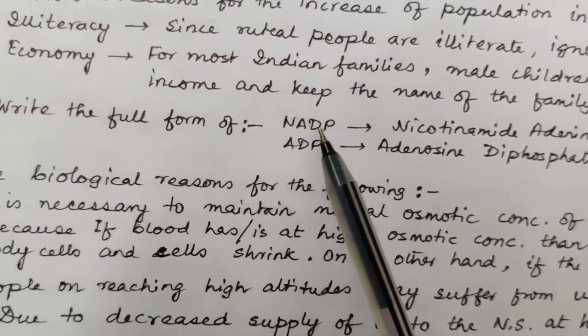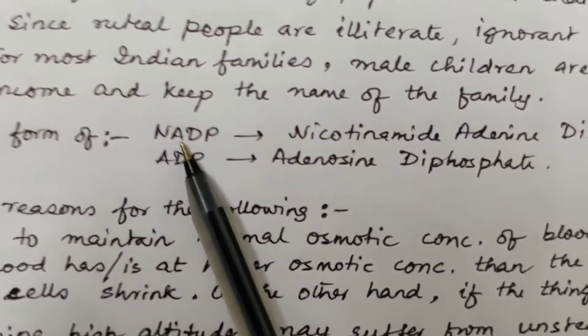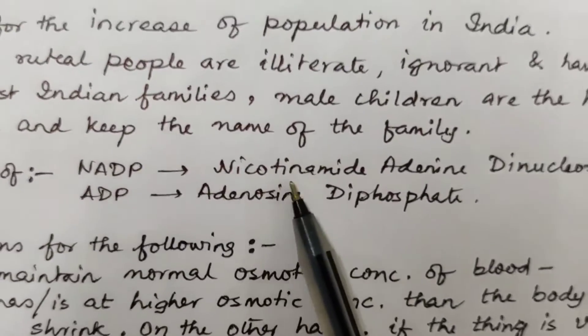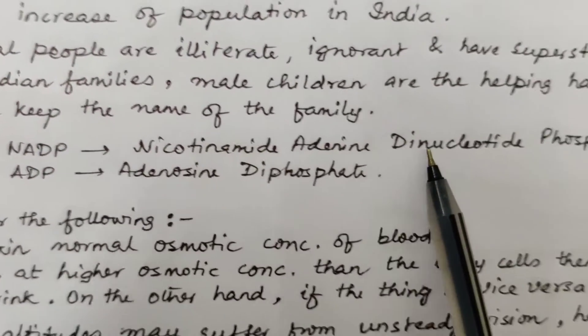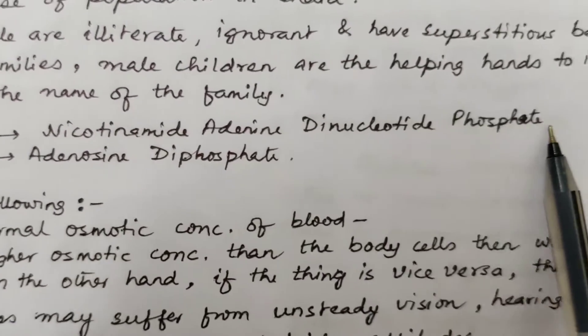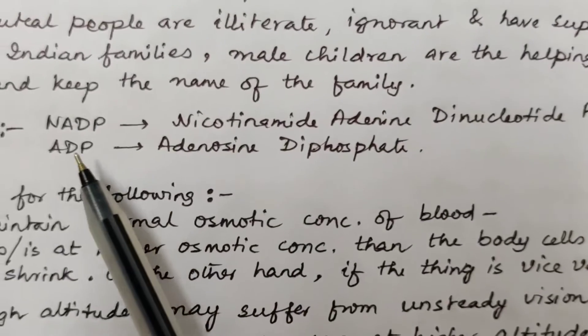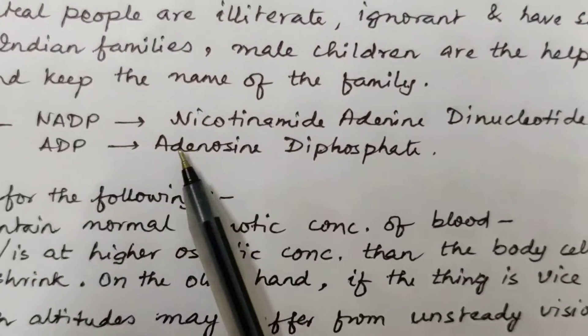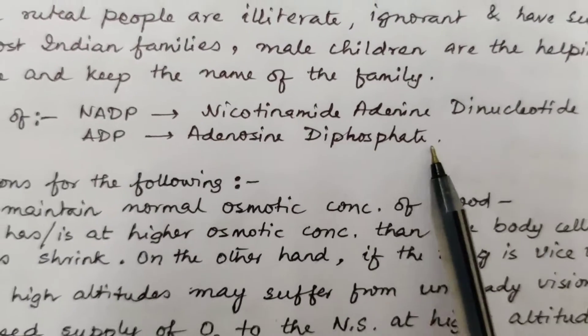Write the full form of NADP: NADP is nicotinamide adenine dinucleotide phosphate. ADP is adenosine diphosphate.